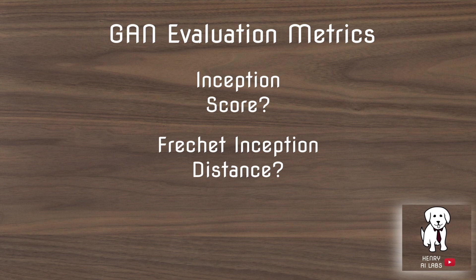These findings raise questions about the evaluation metrics used to assess GANs. The Inception Score and Fréchet Inception Distance are really high for the BigGAN model, yet the generated data does not perform well for this downstream task of data augmentation, suggesting these metrics may not fully capture practical utility.